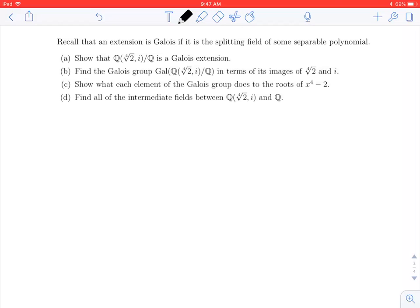Hi everybody. In this video we're going to look at the field extension Q adjoin the fourth root of 2 comma i over Q and show that it's a Galois extension.